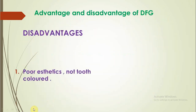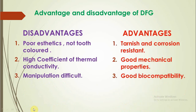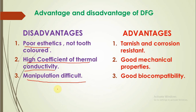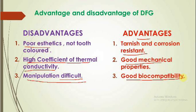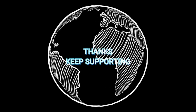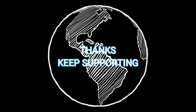Advantages and disadvantages: Starting with disadvantages — it is non-esthetic, and it has a higher coefficient of thermal conductivity, which is why we cannot use it in large pulp cavities. It is difficult to manipulate because it involves many steps, especially degassing and compaction. Advantages: it is tarnish and corrosion resistant, has good mechanical properties, and is biocompatible. This is all about this topic. Make sure to share the knowledge with your friends and keep supporting.